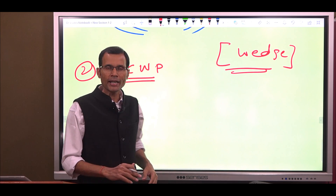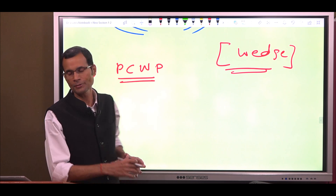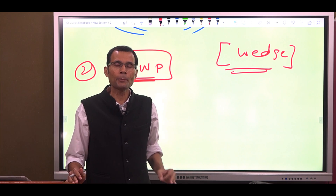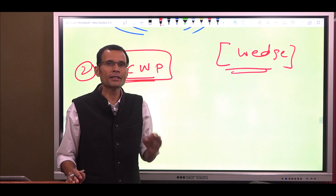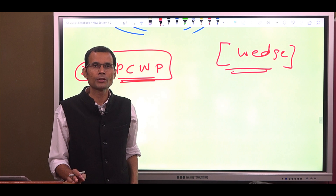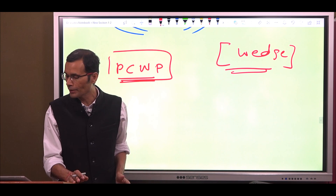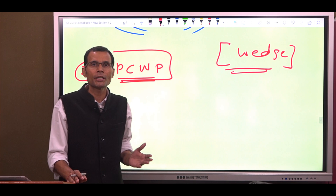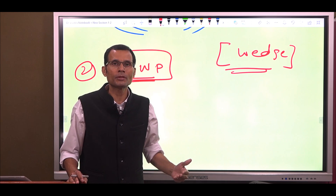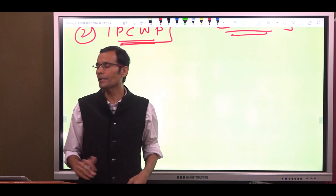Pulmonary capillary wedge pressure, on the other hand, is not a naturally occurring pressure in the pulmonary capillaries — it does not exist naturally there. It gets created because of a certain manoeuvre that we perform.